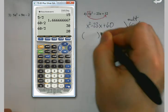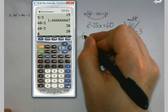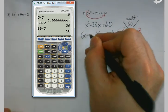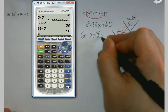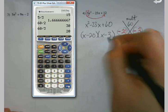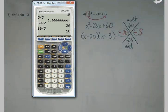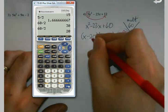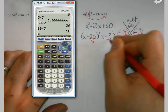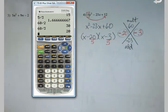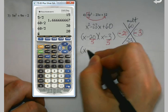x minus 20, x minus 3. And again, don't forget that last part. It's called slide and divide for a reason. Got to do the divide part.